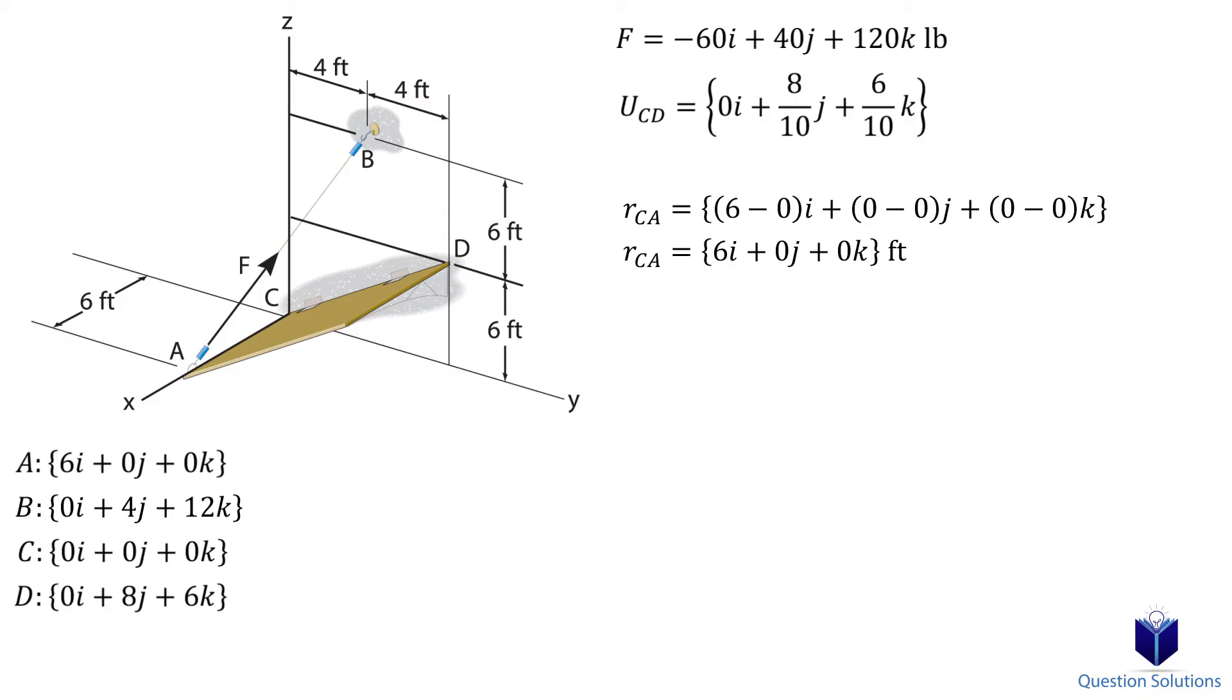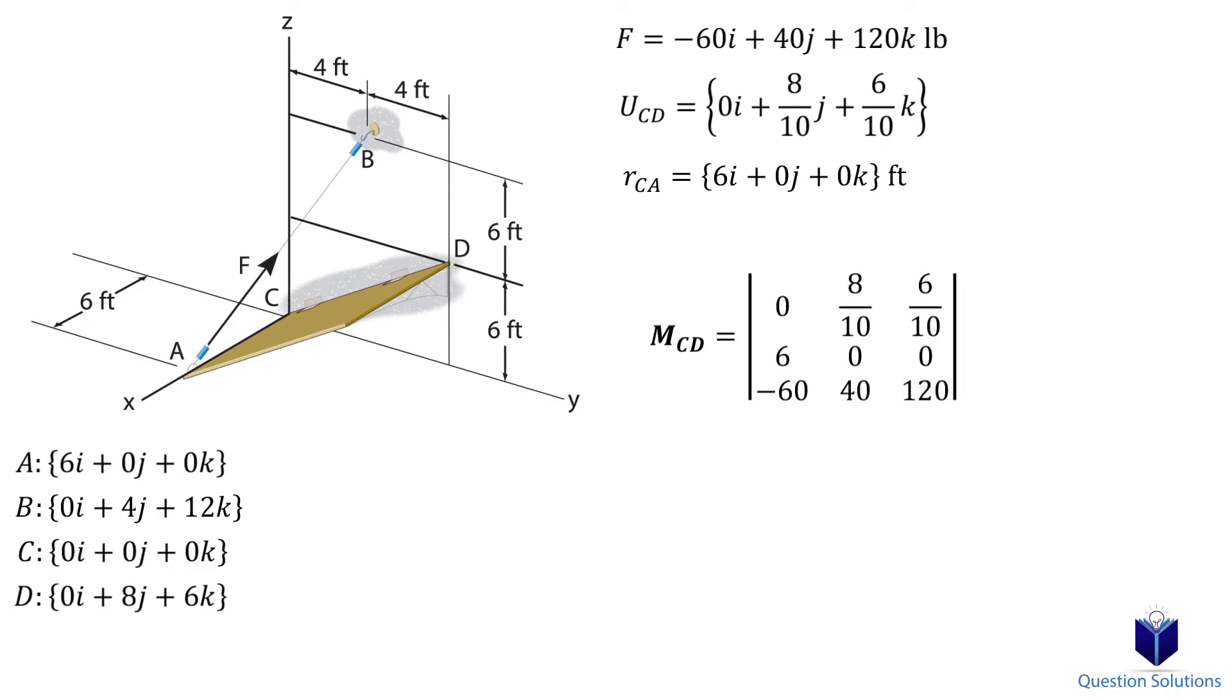We now have all the pieces required, so it is time to do a triple scalar product. If you don't know how to do this, I've included a link in the description on how to solve one step by step. When we solve it, we get our answer. Notice how it is negative, which simply means that the moment acts opposite to the unit vector CD that we chose. I hope this helped, and if it did, please give a thumbs up. Thanks.